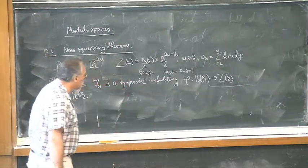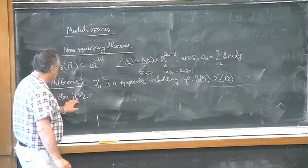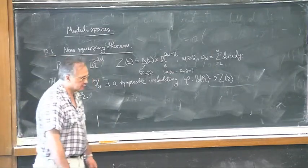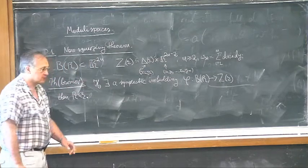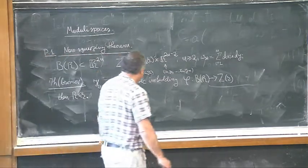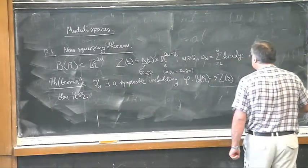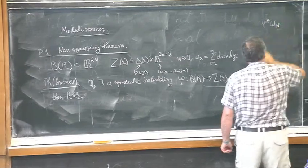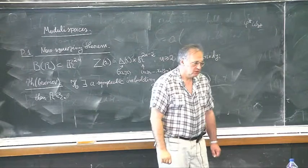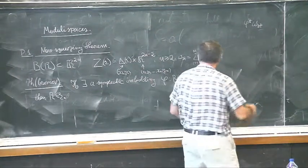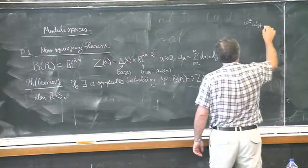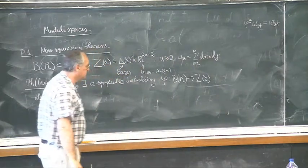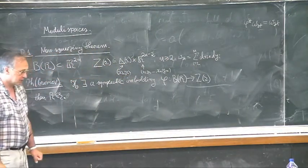Of course, if this condition is satisfied, then the trivial embedding will work — so this is a necessary and sufficient condition. A symplectic embedding or symplectomorphism is a map that preserves the symplectic form in question. In our case, the pullback of the standard symplectic form should equal the same thing.